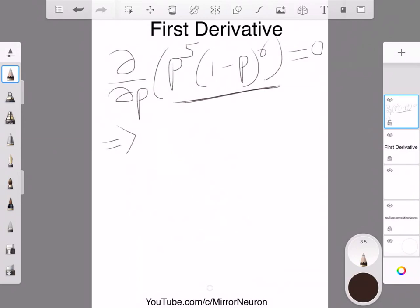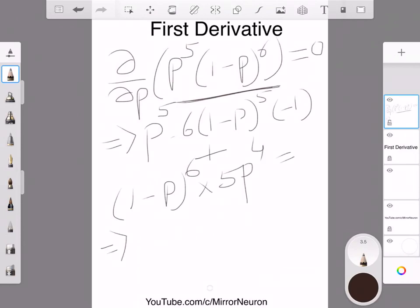But for the other viewers who already know how to calculate partial derivative, you can find it out that this looks something like this: P to the power 5 times 6 of 1 minus P to the power 5 times minus 1, plus 1 minus P to the power 6 times 5 times P to the power 4. And this is equal to 0, because we want to calculate at what point or what value of P where my slope is equal to 0.